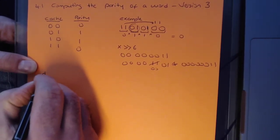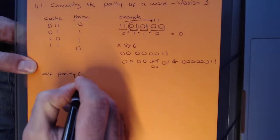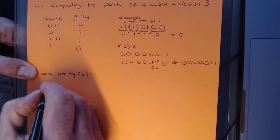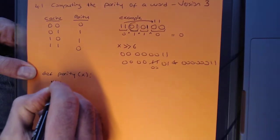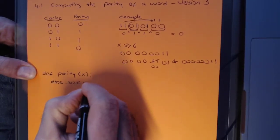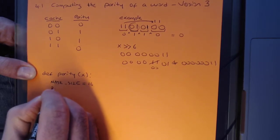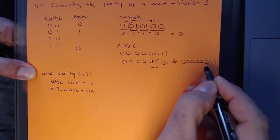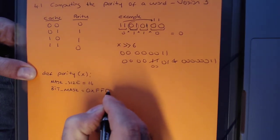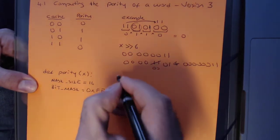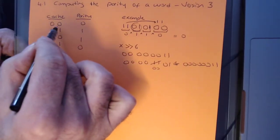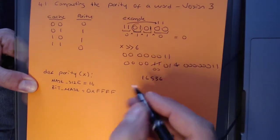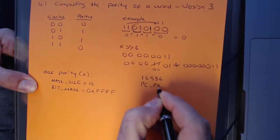So let's define parity, which will take a number and return us a parity. In the real world, we're going to use a 64-bit word, so our mask size will be 16 bits, and our bitmask will be 16 ones. I'm going to assume that my cache is a 16-bit cache, which has 65,536 possible values. So I'm going to assume there's already a pre-computed cache called pre-computed parity cache.